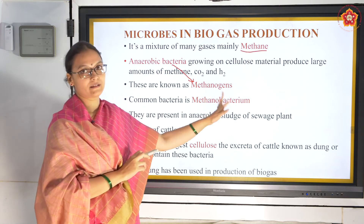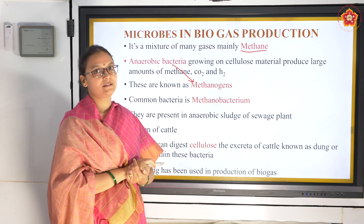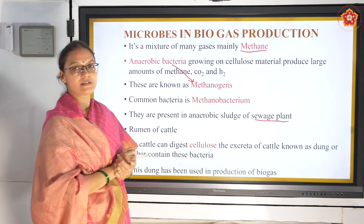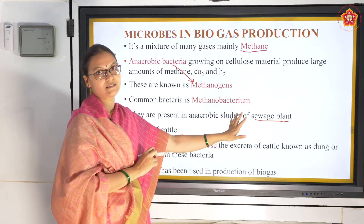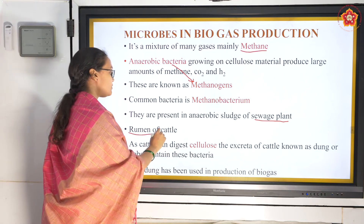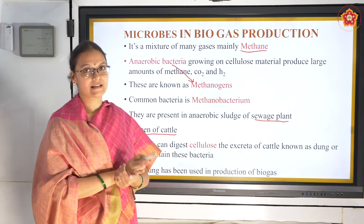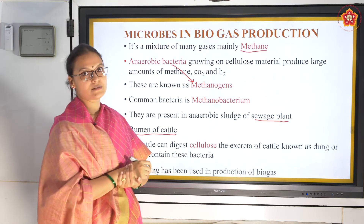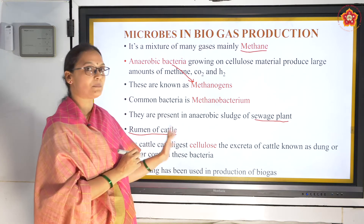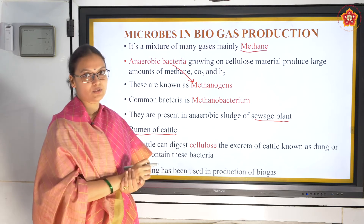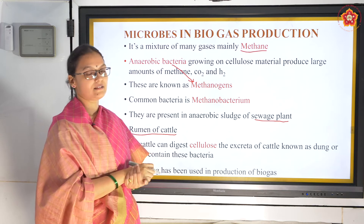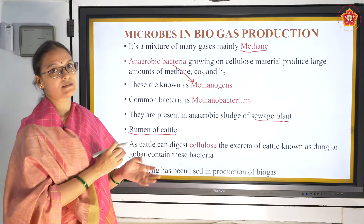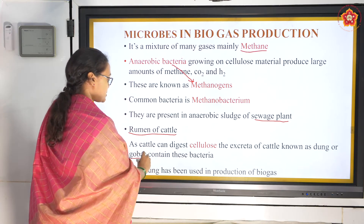The common bacteria are Methanobacterium. Where are they present? Methanobacterium are present in the digester tanks of the sewage system - we spoke about how biogas is produced in sewage plants. They are also present in the rumen of cattle. Cattle eat grass, which is cellulose, so to digest this grass they need methanogens. That is why methanogens are present in the stomach of cattle, and they are also present in the excreta or dung of cattle, which is the main thing used in biogas production - also called gobar.